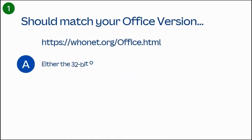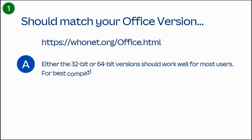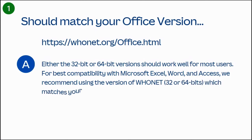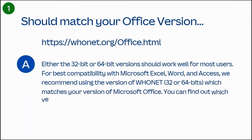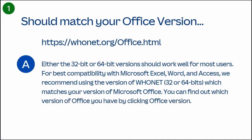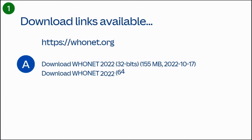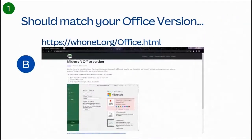Either the 32-bit or 64-bit versions should work well for most users. For best compatibility with Microsoft Excel, Word, and Access, we recommend using the version of HUNET — either 32 or 64-bit — which matches your version of Microsoft Office. Download HUNET 2022 32-bit if you have the 32-bit version of Office, or the 64-bit version if you have the 64-bit version of Office installed.